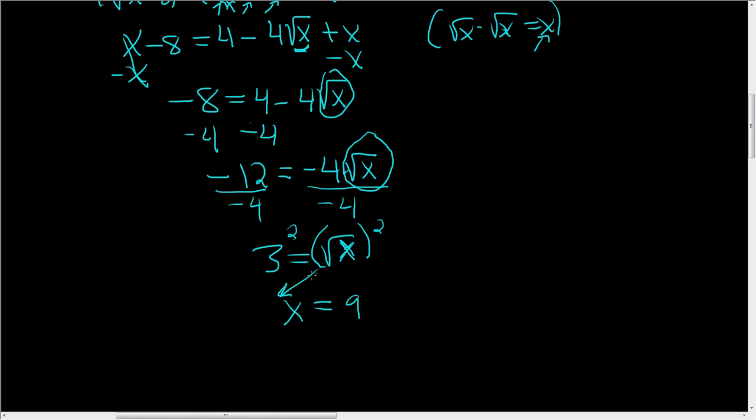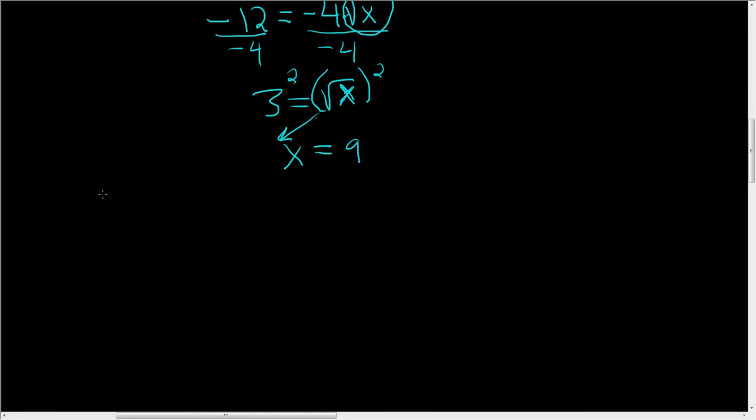Now, whenever you have an equation with square roots, it's a good idea to check. So the original equation was the square root of x plus the square root of x minus 8 equals 2. So we're going to check 9. That means we're going to take 9 and plug it back into the original equation.